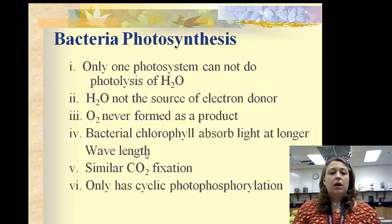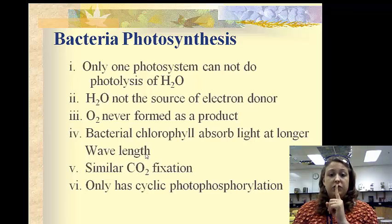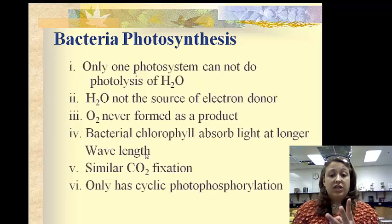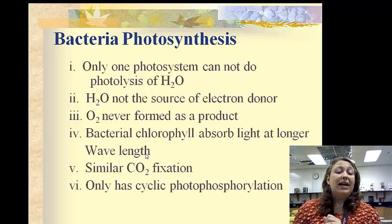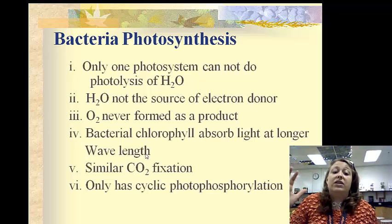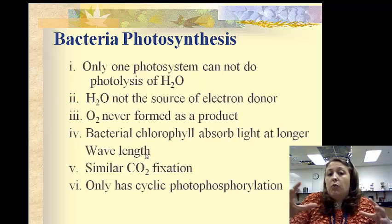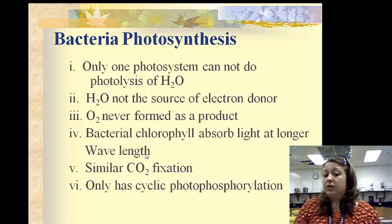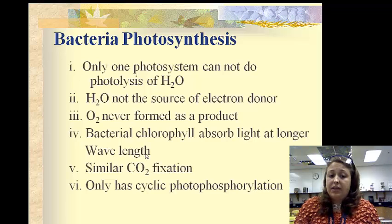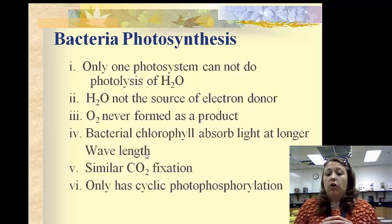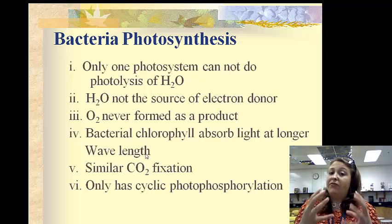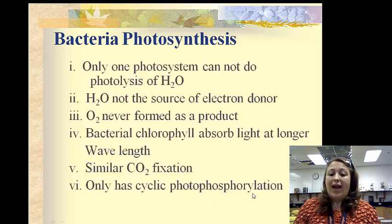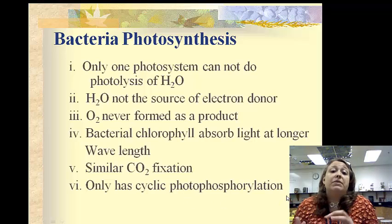Differences in bacterial photosynthesis: there is only one photosystem to do photolysis of H₂O; H₂O is not the source of the electron donor; oxygen is never formed as a byproduct; bacterial chlorophyll absorbs longer wavelengths than normal plant chlorophyll — meaning it can absorb more in the reddish range, since red is a longer wavelength. It does have a similar carbon fixation, and it only has the cyclic form of photophosphorylation — which is simply using light to add a phosphate, in this case to ATP.